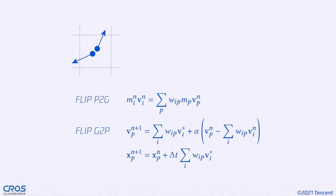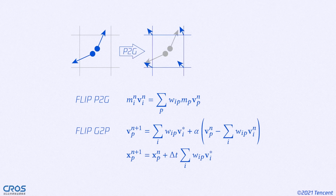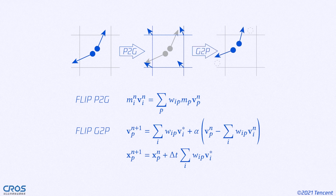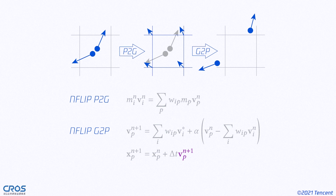We begin from FLIP, where the particle velocities are transferred to the grid, and then the particles are advected by velocities interpolated from the grid. Our first attempt to diminish the dissipation and untrap the particles is to advect the particles with particle velocities.